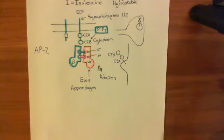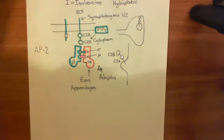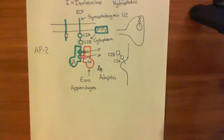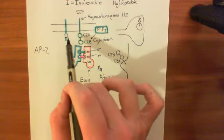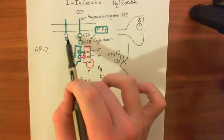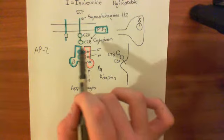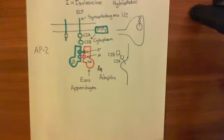Welcome to this next video in which we're discussing clathrin and its role in the endocytosis of a membrane from the plasma membrane of the cell. So far what we've seen is that we have this target protein to be endocytosed which has an endocytic motif available. We know that the adaptor protein here, the adaptor protein complex 2, needs to bind to that endocytic motif.